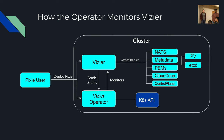This diagram shows how the Vizier operator interacts with different parts inside of the cluster. Once a Pixie user deploys Pixie into their cluster, you have your Vizier operator and Vizier. The Vizier operator monitors Vizier and its different components — such as NATS, metadata, PEMs, cloud connection, and the control plane — and it periodically tries to figure out the state of the different components within Vizier.